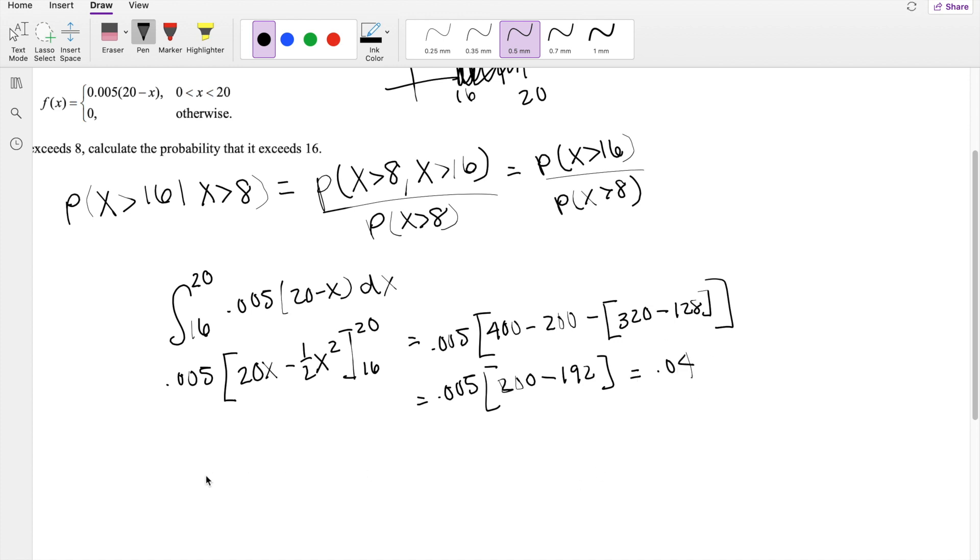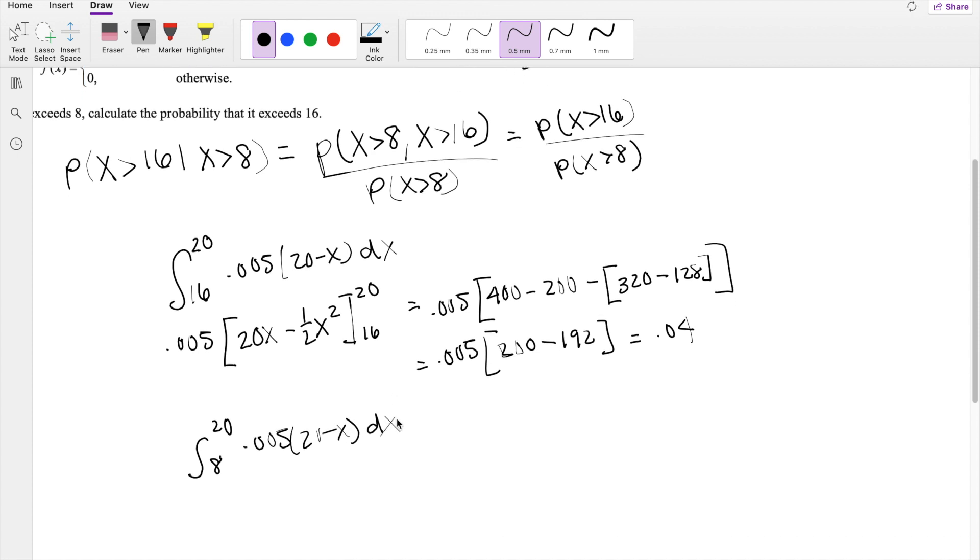Alright, how about the denominator going from 8 to 20, 0.005, 20 minus x, dx. Well, the thing is, we basically did most of the work. Instead of plugging in 16, we just have to plug in 8.